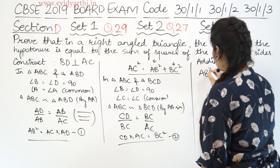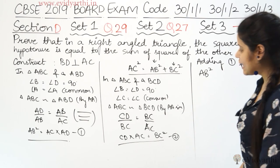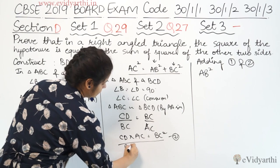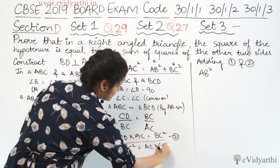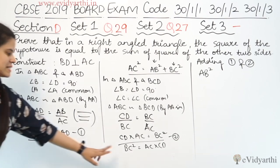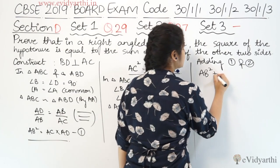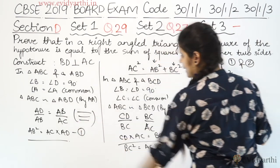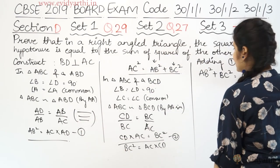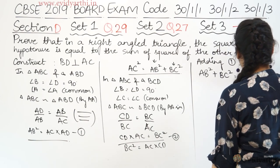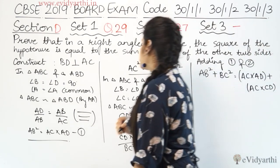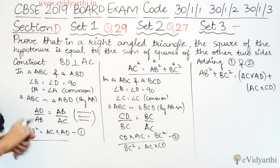1 और 2 को add कर रहे हैं. Left-hand side से करते हैं — AB² है, और BC² को इस equation से इस तरह से लिखेंगे: BC² = AC × CD. तो AB² + BC² equal होगा AC × AD plus AC × CD. हमारे पास यह दो चीजें हैं: AC × AD और AC × CD.